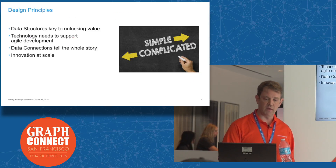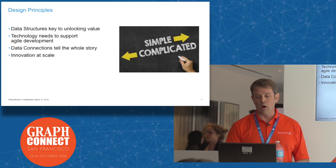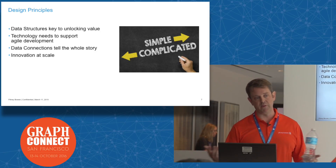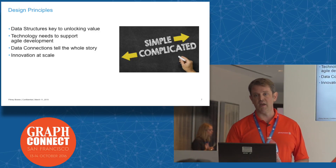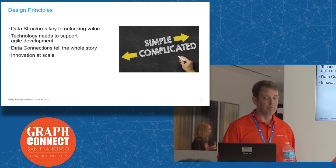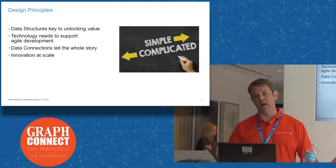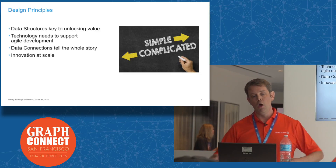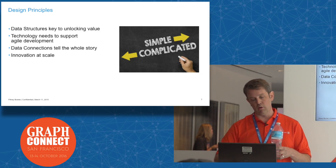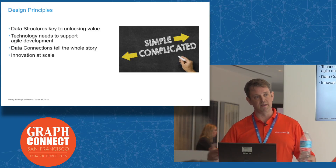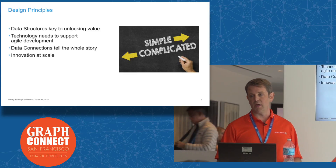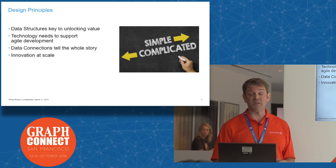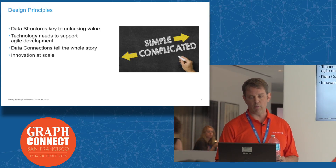The key design principles that led us towards graph and partnering with Neo are these: we really feel data structures are very key to unlocking the value and information that exists across your enterprise. If you look at an enterprise of any size, you're talking about hundreds of data sources that need to be integrated for a single customer view. We need something that supports agile development in a situation like that. Graph, because of its schema-free nature and agility, is really great at supporting a more agile process — on top of being able to understand relationships at scale. That's a big reason why we've partnered with Neo.